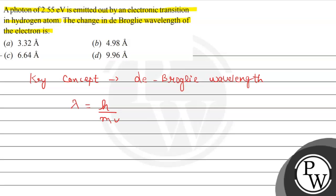Here H is Planck's constant, M is the mass of the particle, and V is the velocity of the particle. The change in De Broglie wavelength can be written as: delta lambda equals H upon M times V2 minus H upon M times V1, where V2 and V1 are the velocities at different orbits.